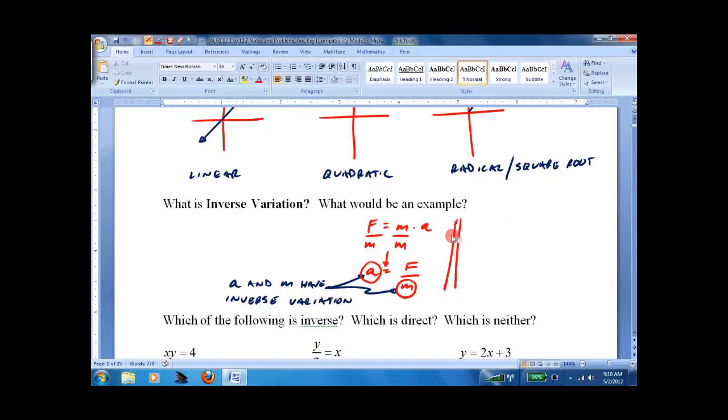So the classic example is y equals 1 over x. Now it's very rare that it's actually 1 over x, so we write it as y equals k over x, where k is a constant.